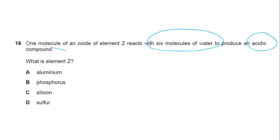For these questions, strong memorization of inorganic chemistry equations is essential — that's my personal advice. You should know that aluminum oxide does not dissolve in or react with water due to strong bonding. Silicon dioxide (SiO2) also does not react with water. This cancels out options A and B.